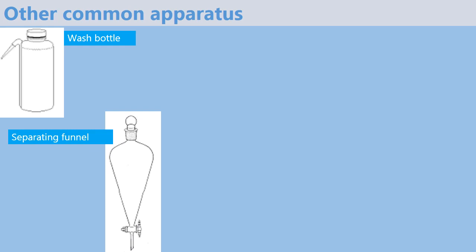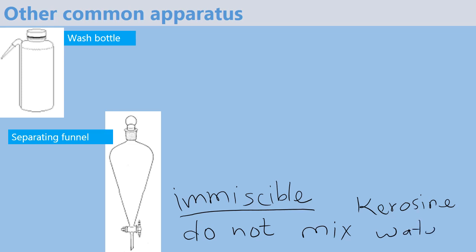Again, we have a separating funnel. This apparatus is used when separating immiscible liquids. Immiscible means liquids that do not mix. For instance, kerosene and water do not mix.